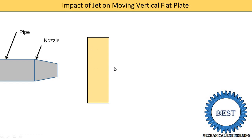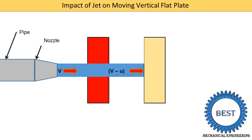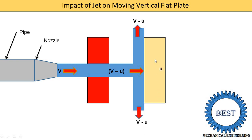Water coming out from the nozzles with velocity V (in meters per second), and the plate is moving with velocity U (in meters per second). Up to a certain flow rate, the plate does not move, but when we increase the flow rate Q, the plate starts to move with velocity U. After that, water leaves the surface of the plate perpendicular to the direction Z, and its outlet velocity is V minus U.